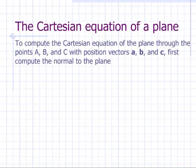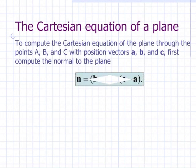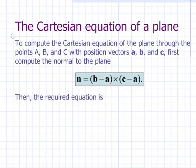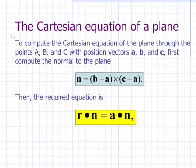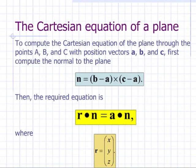To compute the Cartesian equation of the plane through the points A, B and C with position vectors A, B and C respectively, we first compute the normal vector to the plane, which is the vector product of the two direction vectors B minus A and C minus A. Having computed this, the required equation is R dot N equals A dot N, where R is the position vector of a general point on the plane (X, Y, Z).